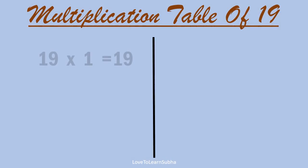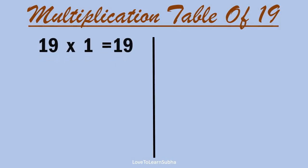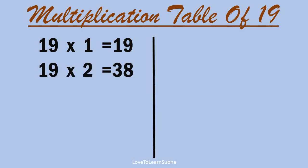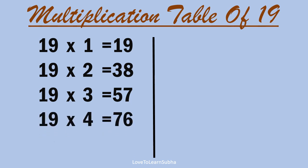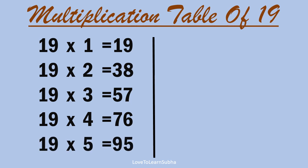19 1s are 19, 19 2s are 38, 19 3s are 57, 19 4s are 76, 19 5s are 95.